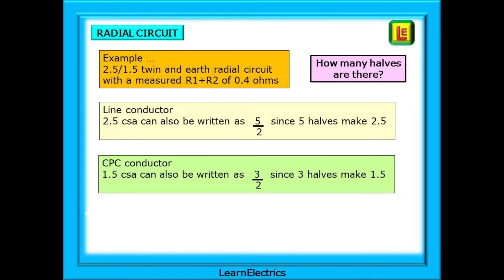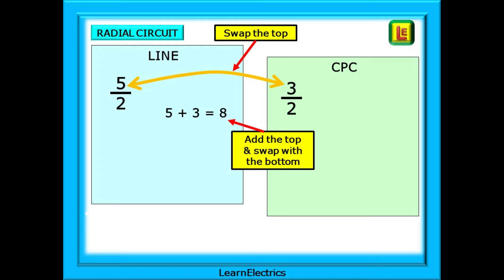Let's calculate r1 and r2 for the given radial circuit. We are using 2.5 by 1.5 twin and earth installed in a radial circuit with a measured r1 plus r2 of 0.4 ohms. To start, we must determine how many halves there are in each conductor. The line conductor is 2.5 CSA, which can also be written as 5 halves — 5 over 2. The CPC is 1.5mm CSA, which can be written as 3 halves, or 3 over 2. We will first swap the top numbers, then add the top numbers together and swap these for the bottom numbers — all will make sense on the next slide.